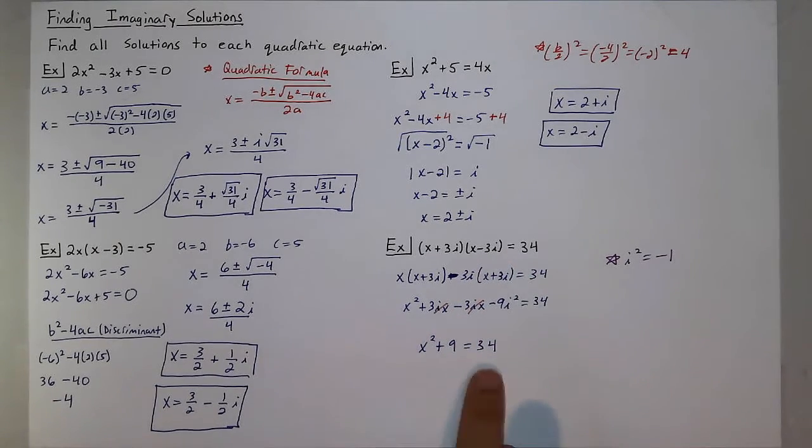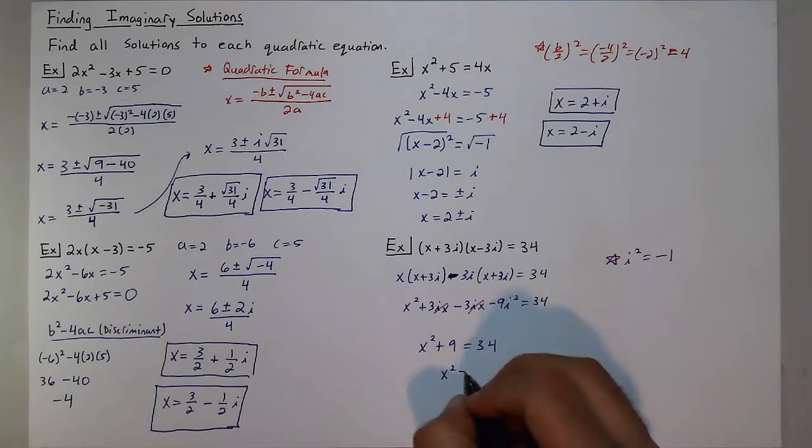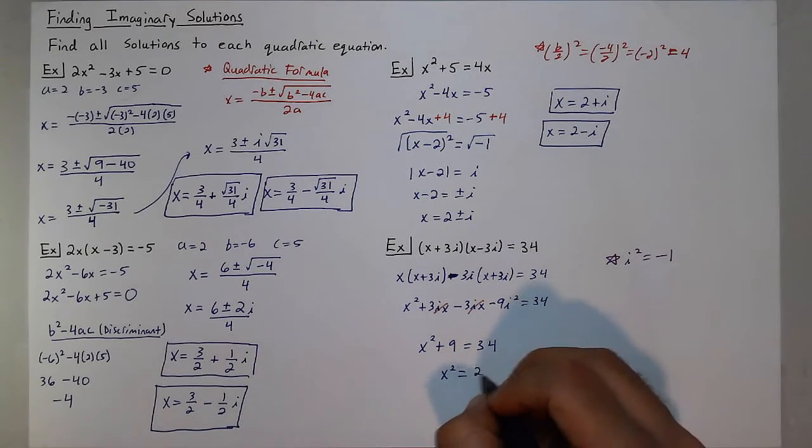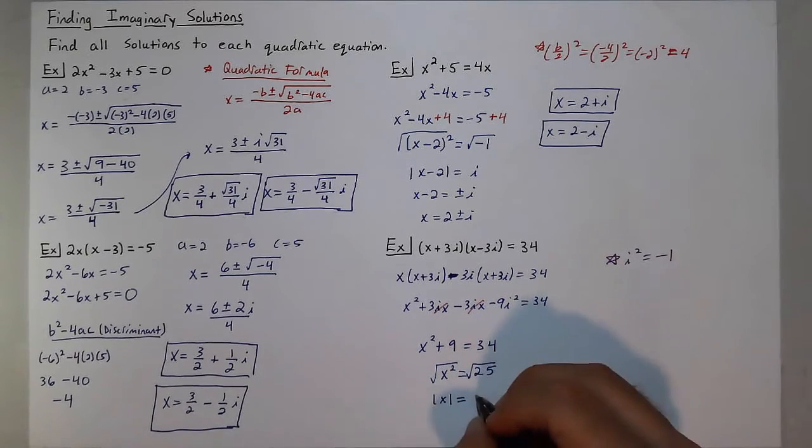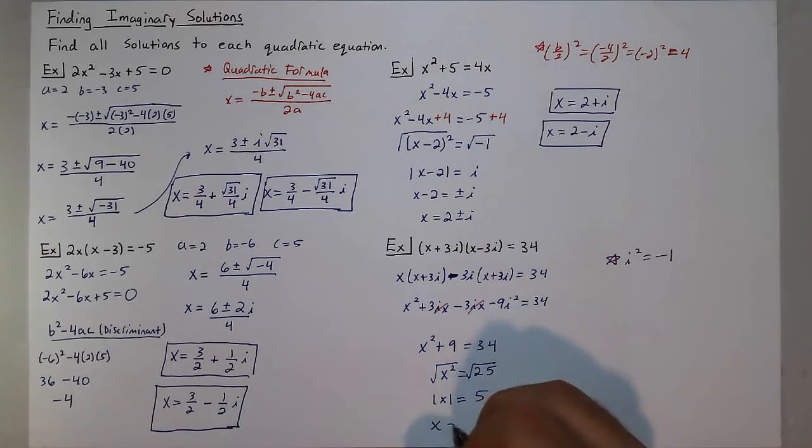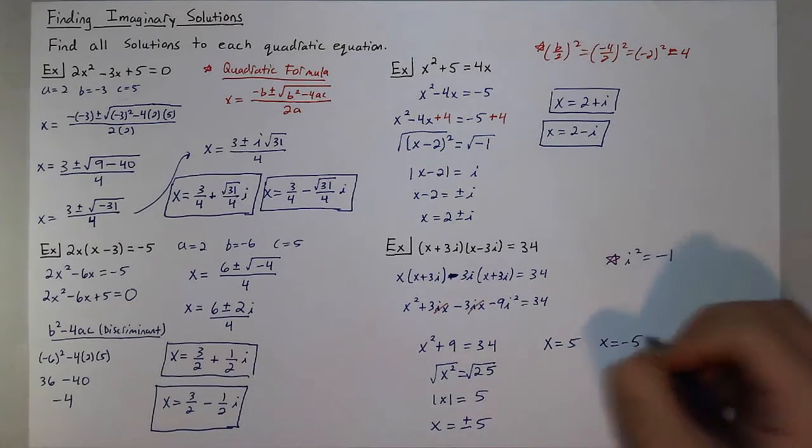And now I have a one variable equation. I can just solve this for x. Subtract 9. I get x² equals 25. Take the square root of both sides. I get absolute value of x equals 5. x equals positive or negative 5. So my two solutions would be positive 5 and negative 5.